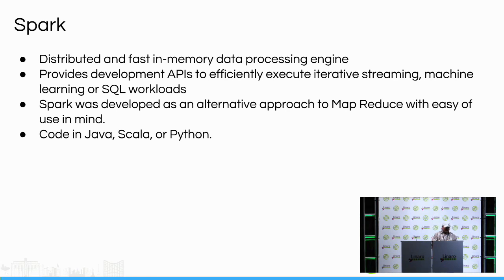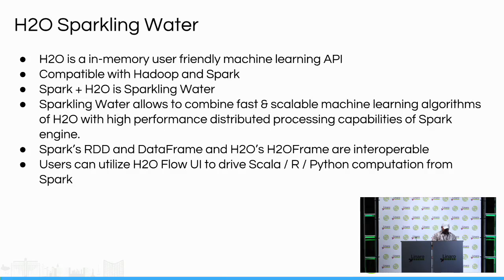You can use Java, Scala, or Python for coding in Spark. In this demo, Spark will be running on top of ODPI-based Hadoop and will use Hadoop's YARN as the resource manager. We'll have a cluster of three nodes with Spark running on top of ODPI, and we'll also use H2O Sparkling Water, which will be running on top of Spark. H2O is an in-memory, user-friendly machine learning API.